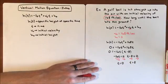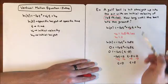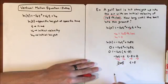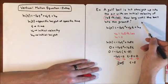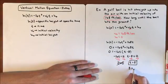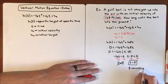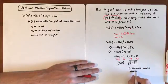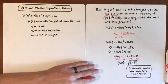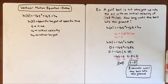We have two answers, so we need to figure out if both are valid. t equals 0 represents when the ball is on the ground initially — when we hit it — so that answer makes sense mathematically but doesn't answer the question of how long until the ball hits the ground. The answer is t equals 8: it will take 8 seconds until the ball hits the ground. And that is a beginning problem for the vertical motion equation.